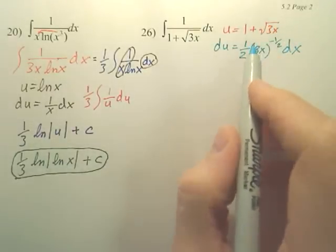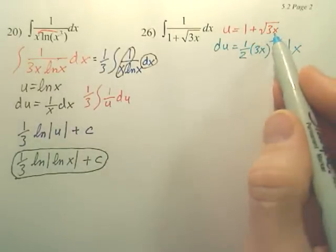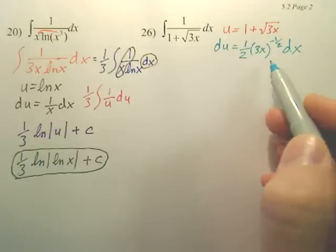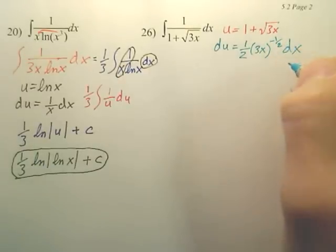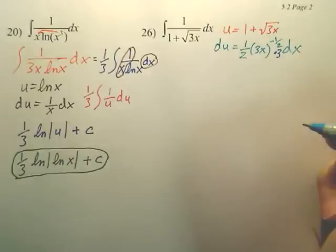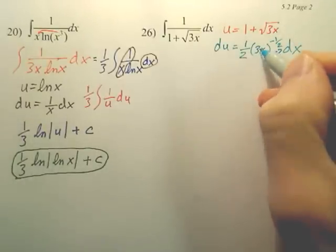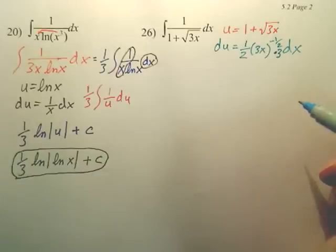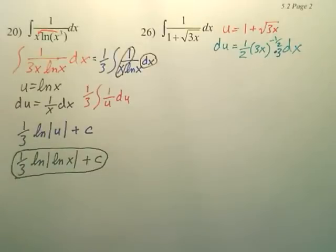Okay, 1 half comes out front, leave the 3x, lower the power, and multiply by what? What'd I forget? 3. I forgot to multiply by 3. Squeeze that guy in. Because of the chain rule? Got it? Forgot the 3 because you have to derive the inside, which is 3. So squeeze that little bad boy in there.